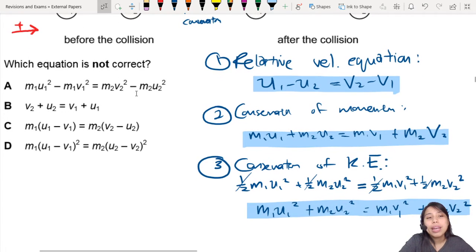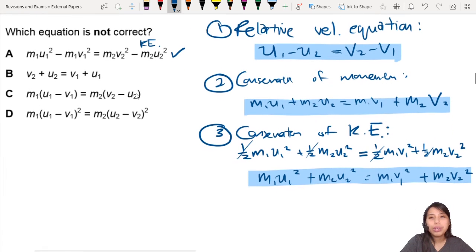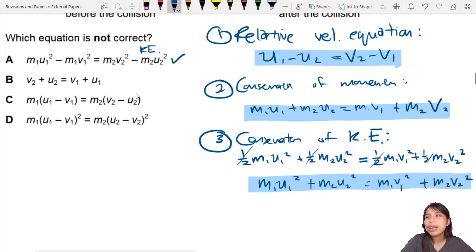First one, M1U1 square minus M1V1 equals to M2V2. So this is rearranging the KE equation, right? All the squares. So you got to look and see M1V1, then M2V2 square minus M2U2. Oh, correct. Rearrange it. I'm doing it mentally, but you can write it out just to check and be sure.